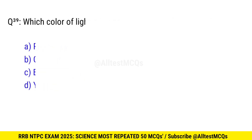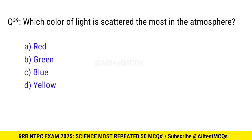Question 39. Which color of light is scattered the most in the atmosphere? Right option is C, blue.